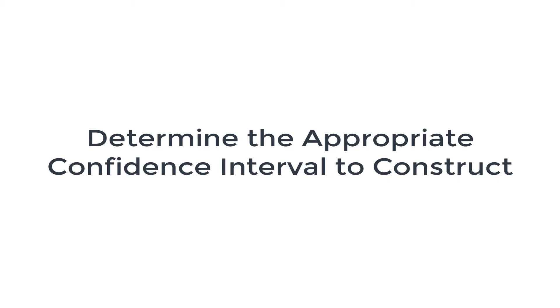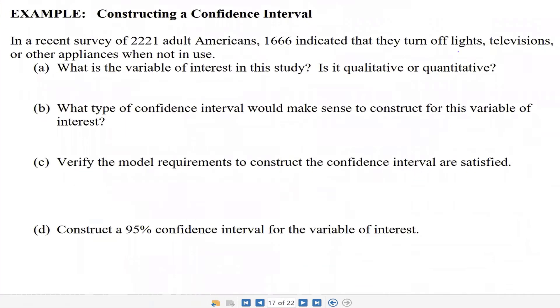Let's model the thinking that you should be going through when you're looking to construct a confidence interval. Here's an example. In a recent survey of 2,221 Americans, 1,666 indicated they turn off lights, televisions, and other appliances when not in use.